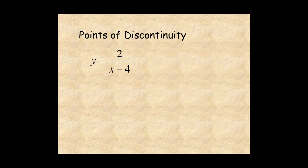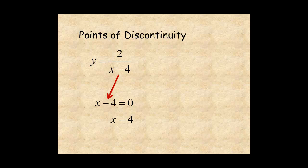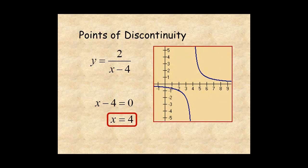For the function y equals 2 over x minus 4, when you set the denominator equal to 0, you have the equation x minus 4 equal to 0. When you solve this equation, you get a point of discontinuity at x equals 4. Here is the graph of the function.